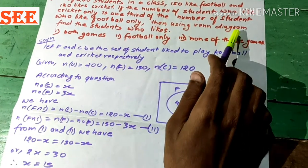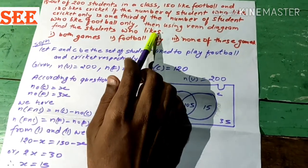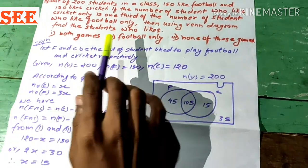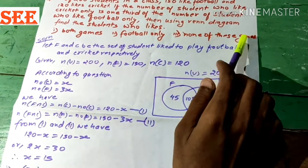Then, using Venn diagram, find the students who like both games, football only, none of these games.